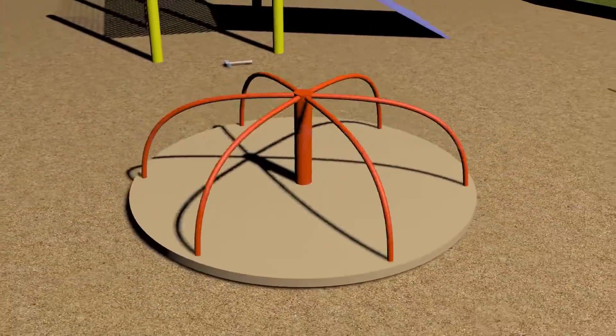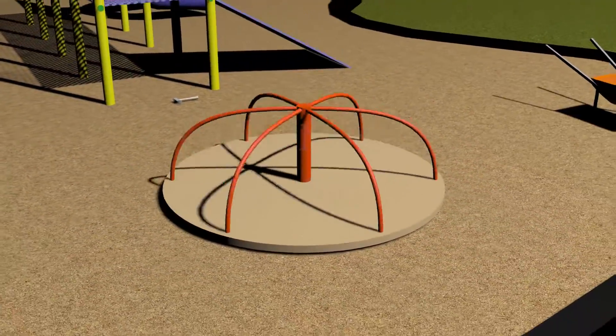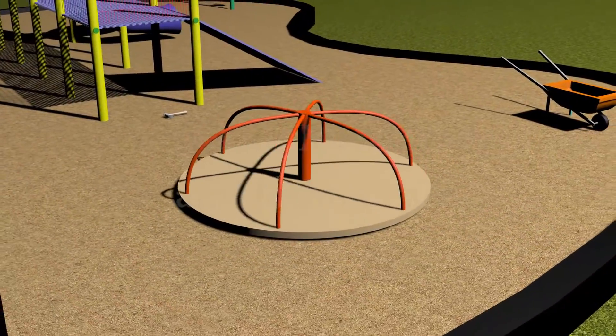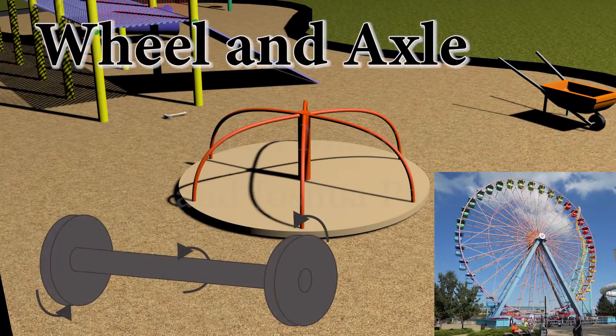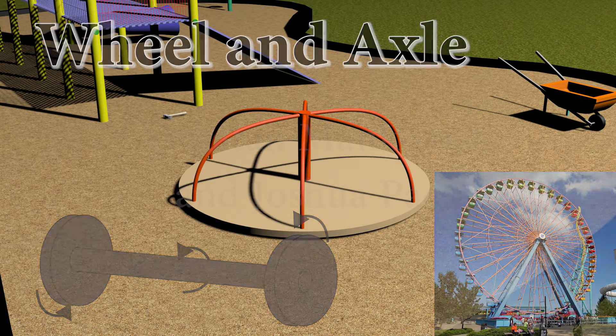The wheel and axle consists of a wheel attached to a smaller axle so that these two parts rotate together, in which a force is transferred from one to the other. A hinge or bearing supports the axle, allowing rotation.